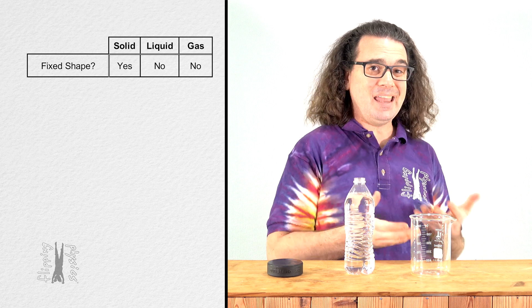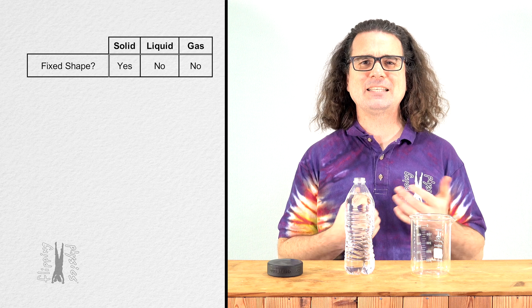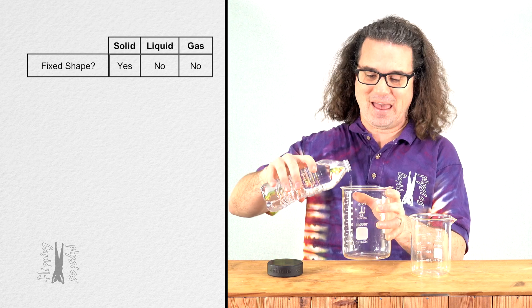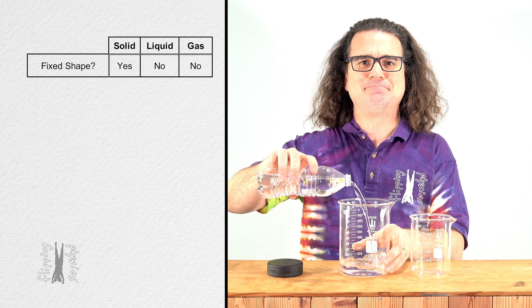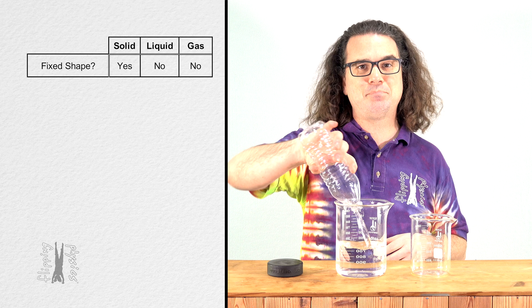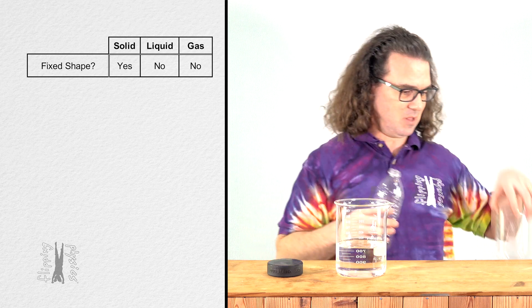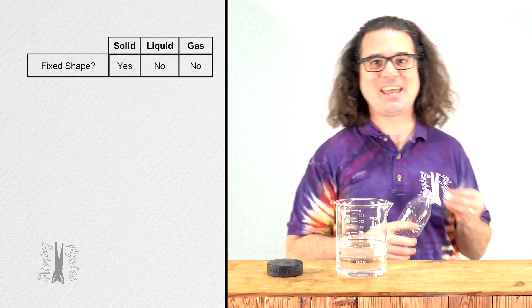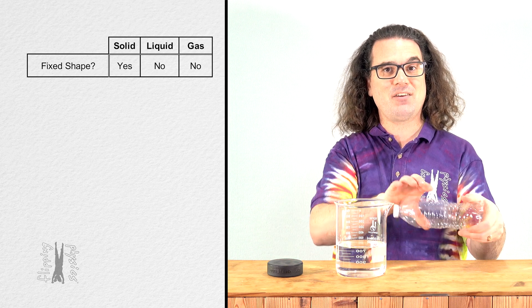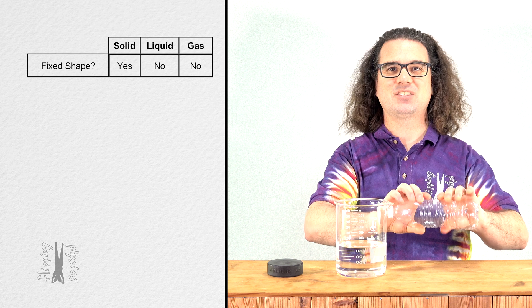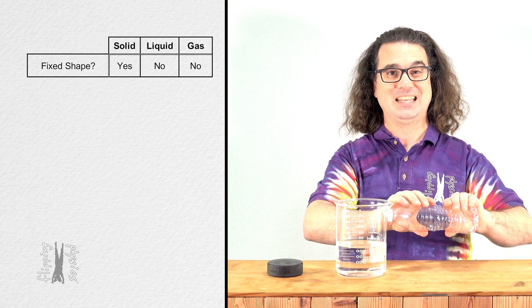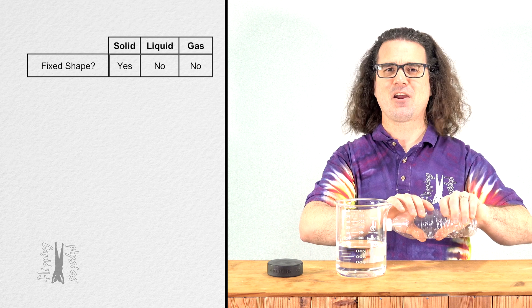With regards to the air in the beaker, which is a gas, you know what, let's pour the water back into the beaker and use the air inside the bottle as our example of a gas instead. Hopefully, you can see that I can change the shape of the air inside the bottle just by squeezing the bottle and changing the shape of the bottle which contains the air.